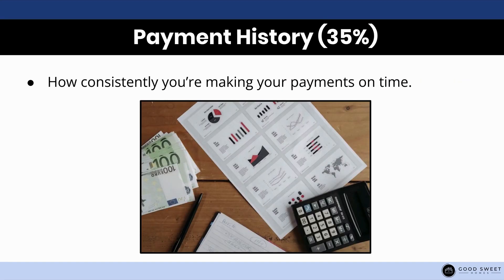The first one is payment history, and this is one of the biggest chunks — it accounts for 35% of your total score. This is basically how consistently you're making your payments on time. If you have a mortgage and you're always paying late, then naturally the lender is going to report that and you're going to get dinged on your credit score. So make sure you're always paying on time. If you do have an issue with payments one month, definitely call your lender and set up some kind of agreement so that you can pay without them hurting your credit score.